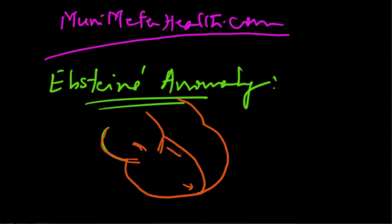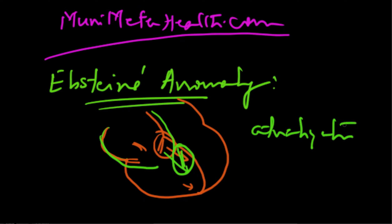The definition of Epstein's anomaly is apical displacement of septal tricuspid leaflet. Remember the tricuspid leaflets are three of them. One here, another one here and another one here. It is this apical displacement that occurs towards this end of the heart of this septal leaflet that is causing the atrialization of the right ventricle.